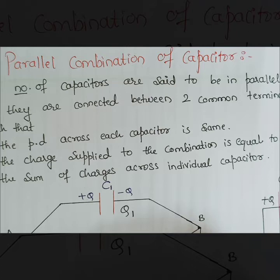What happens if you do parallel combination or parallel connection? In this case, the potential difference across each capacitor remains same. In series, it was getting divided, whereas in parallel, it is same. And what is getting divided here? Charges are getting divided.